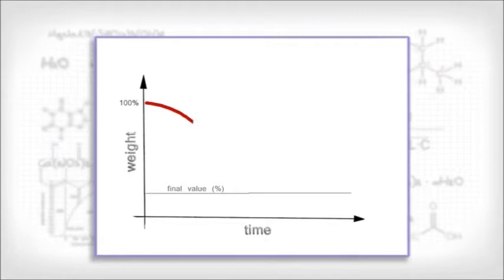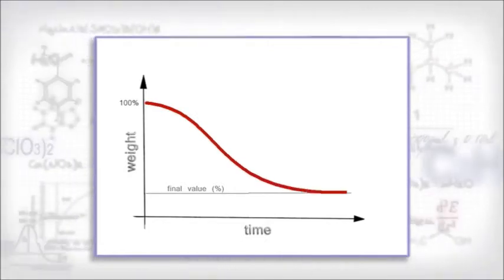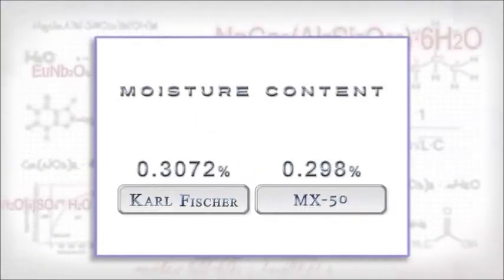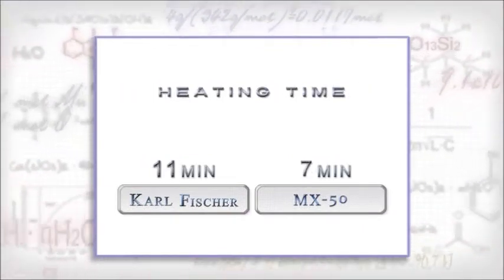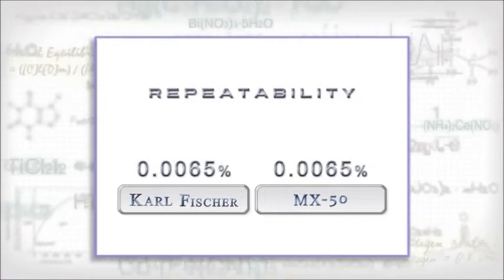A&D analyzers use the thermo-gravimetric or loss on drying principle and offer the accuracy of the Carl Fischer technique, but in less time and with better repeatability.